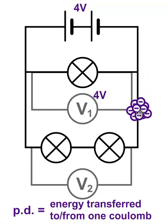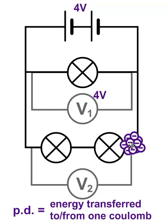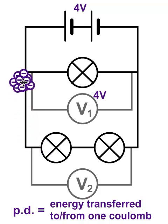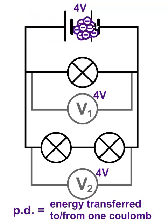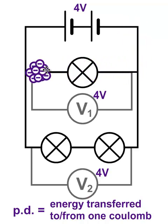Now how about this branch? Currently the coulomb of charge has got four joules of energy. When it goes through this branch the only things it's got to give energy to are those bulbs, so it must give four joules of energy to those bulbs. If it gives four joules of energy to the bulbs, then the potential difference across that whole branch must be four volts. Then it goes back to the cells, gets some more energy, and the electrons can then go through this branch again giving all their energy to that branch.